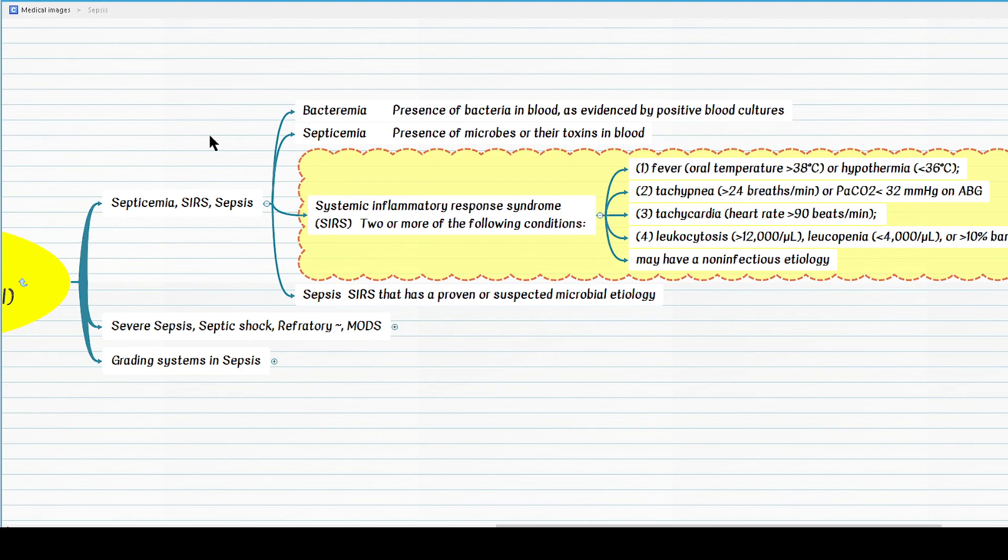And white BC changes, similar to temperature, either high or low white BC count would be considered: leukocytosis of more than 12,000 per microliter or leukopenia, that's less than 4,000 white BCs per microliter. However, please remember this bandemia, if the patient has more than 10% bands, regardless of white BC count, we still consider it as a criteria.